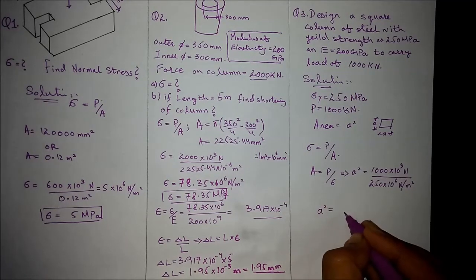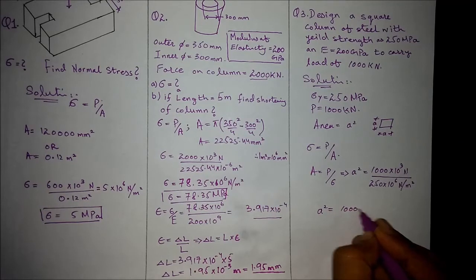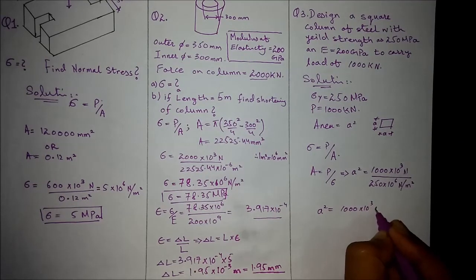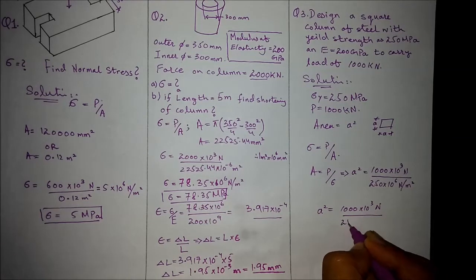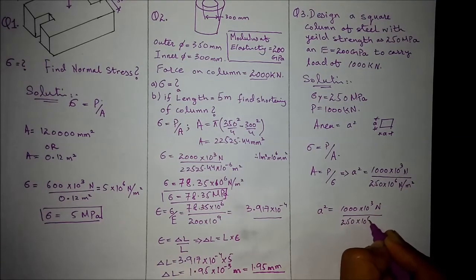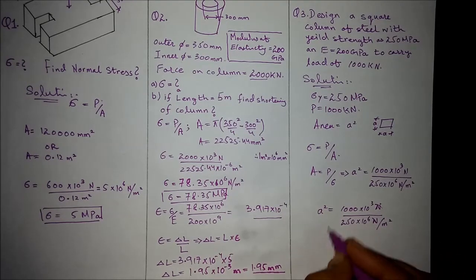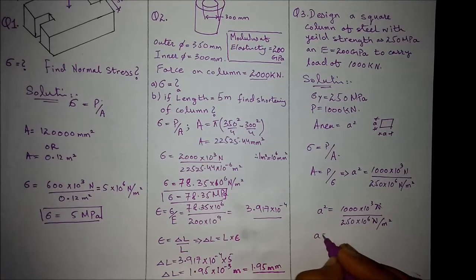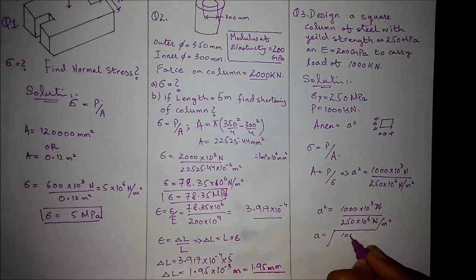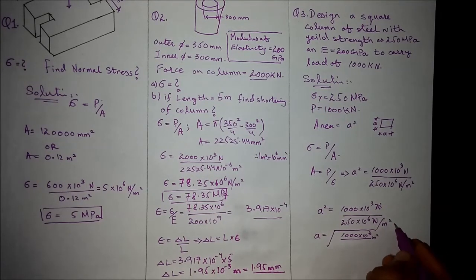A square equals 1000 newton over 250 times 10^6 newton per meter square. Newton cancels out newton. Under root on both sides, A equals that gives us one dimension. It comes out to be meter, equal.